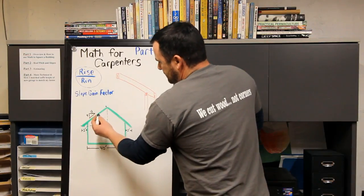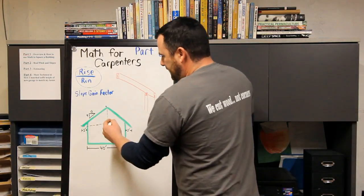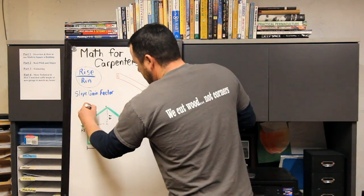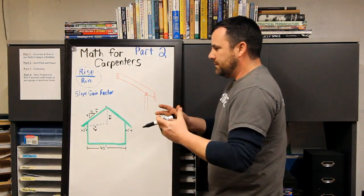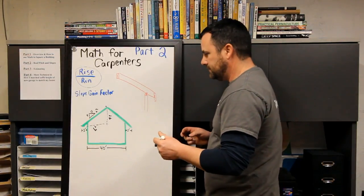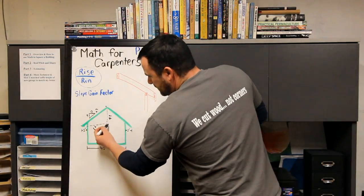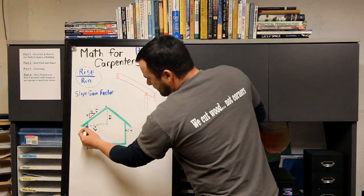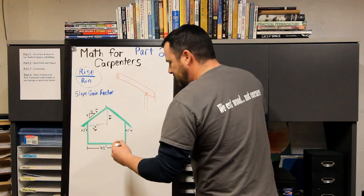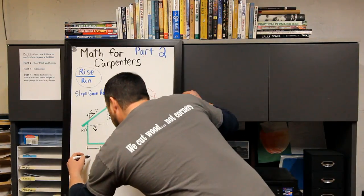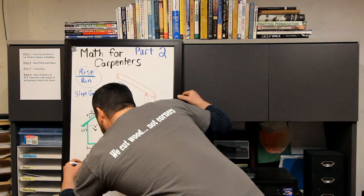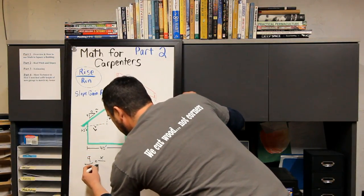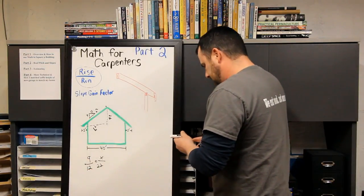Whether using Pythagorean theorem or anything, this could be your a squared, b squared, c squared. That's one way to figure it out. Or you can figure it out by manipulating your rise over run. So my run is my horizontal number. I'm half of my building width, I'm 20 feet plus two, so I'm 22 feet run.